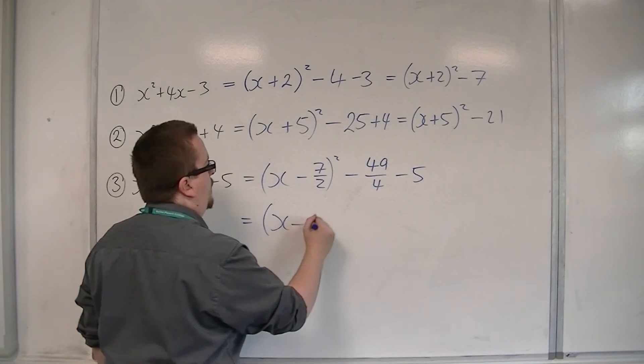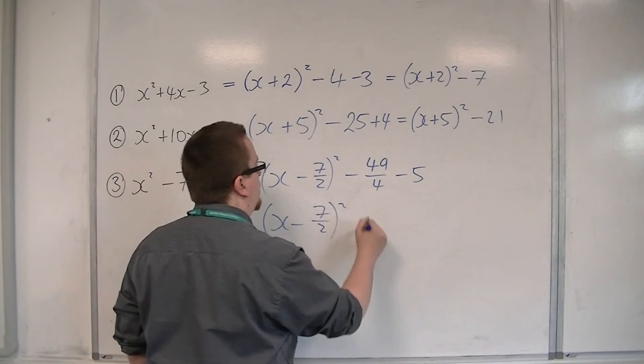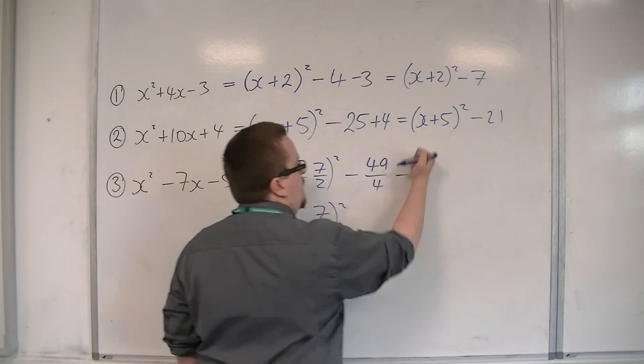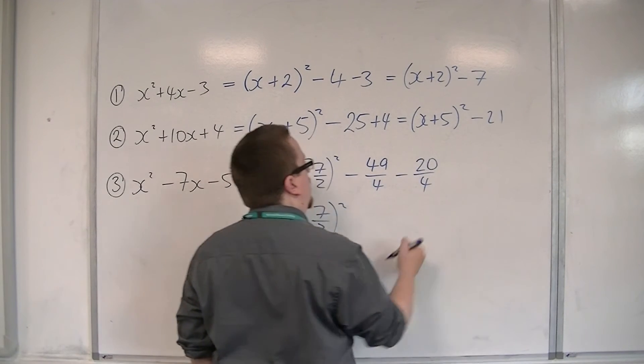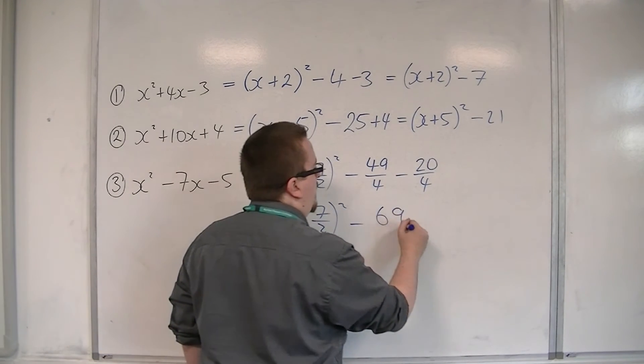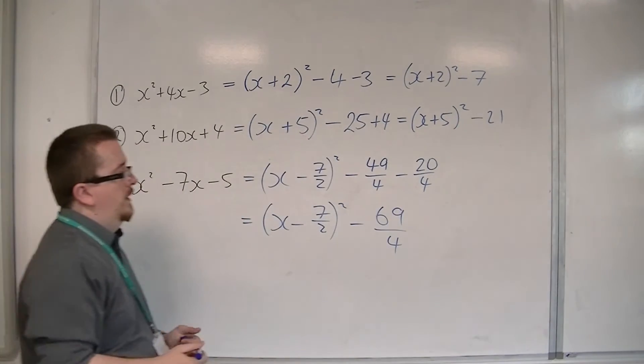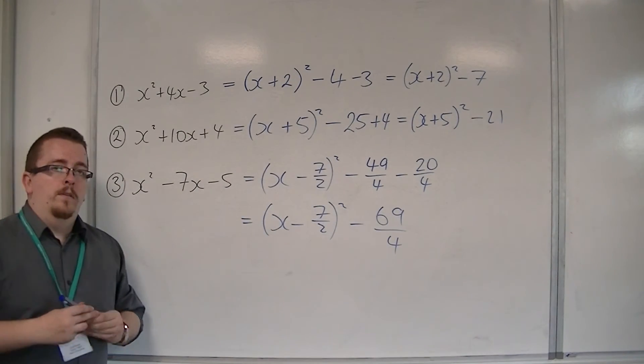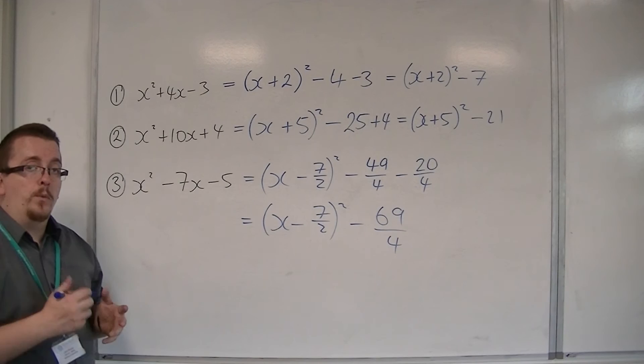So this is x minus 7 halves squared. Now I'm going to write that 5 as 20 over 4. And so this is minus 69 over 4. And that's the final completing the square in this case.